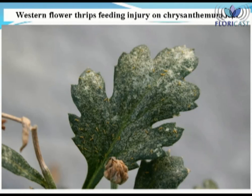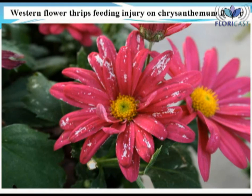Thrips — in this case the western flower thrips — feed within the mesophyll and epidermal cells, so they cause plant leaves to have a silvery appearance, as demonstrated in this image of thrips feeding damage on a chrysanthemum leaf. This symptom is expressed because as the thrips feed and remove plant fluids, the empty cells fill up with air, giving the damaged plant parts a silvery appearance. Thrips feeding injury and or damage is very noticeable on open flowers, as exhibited on this chrysanthemum flower, although this is dependent on the flower color.